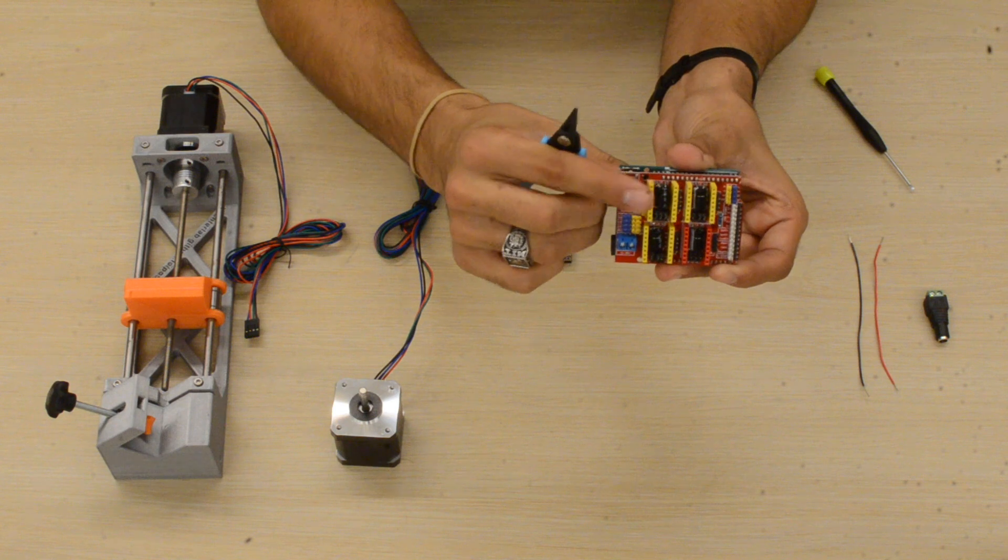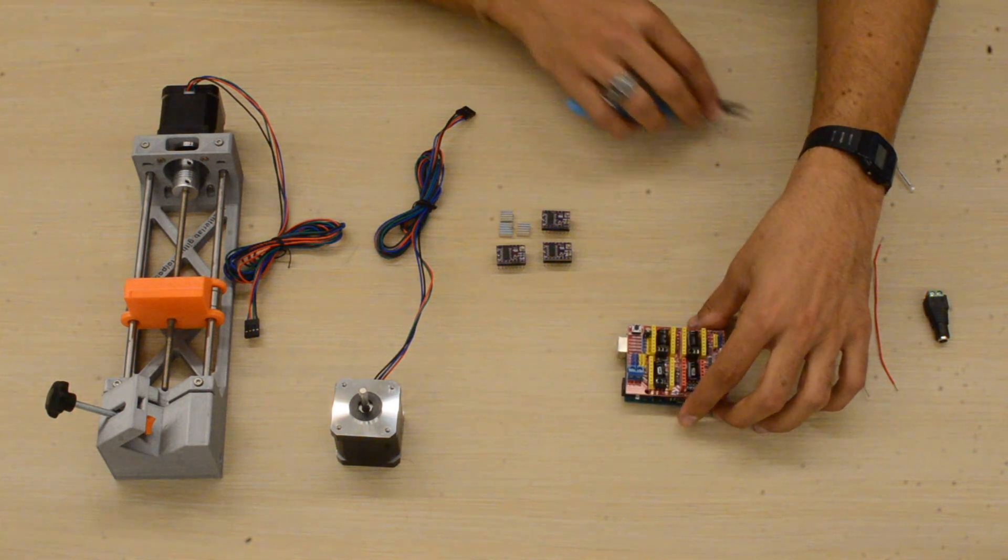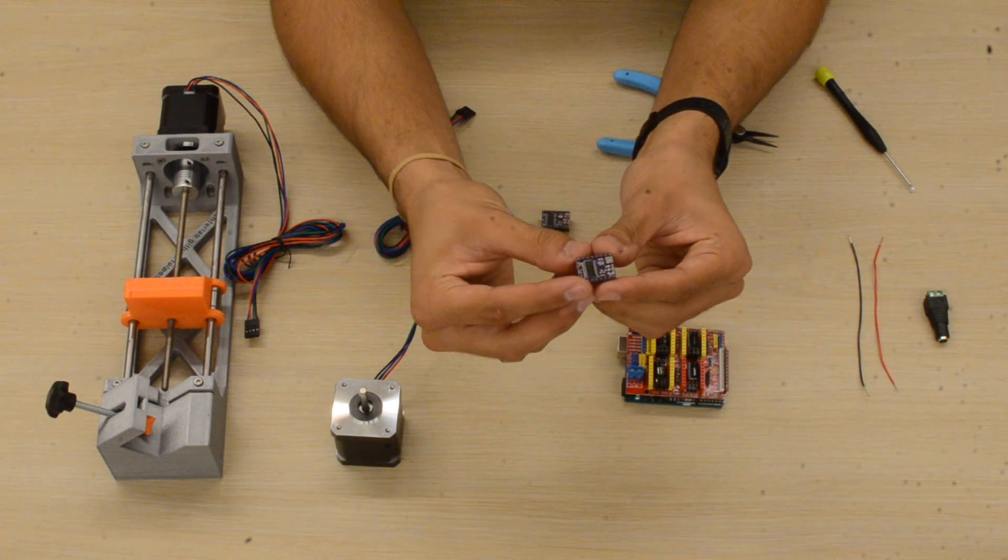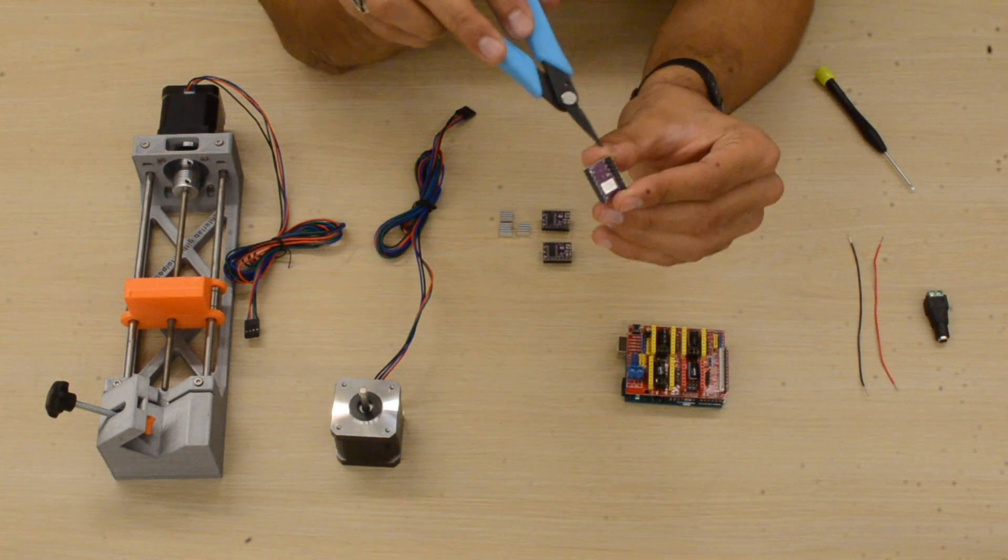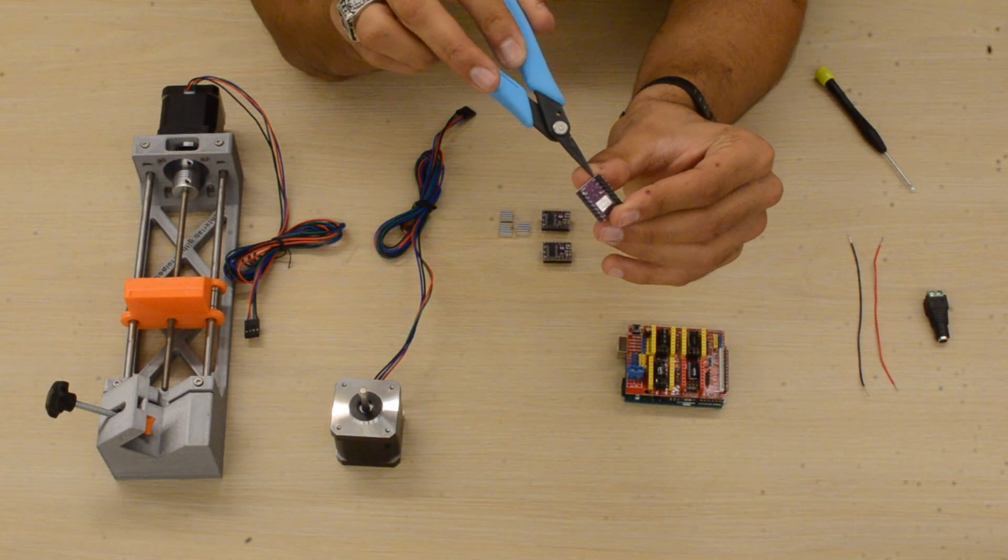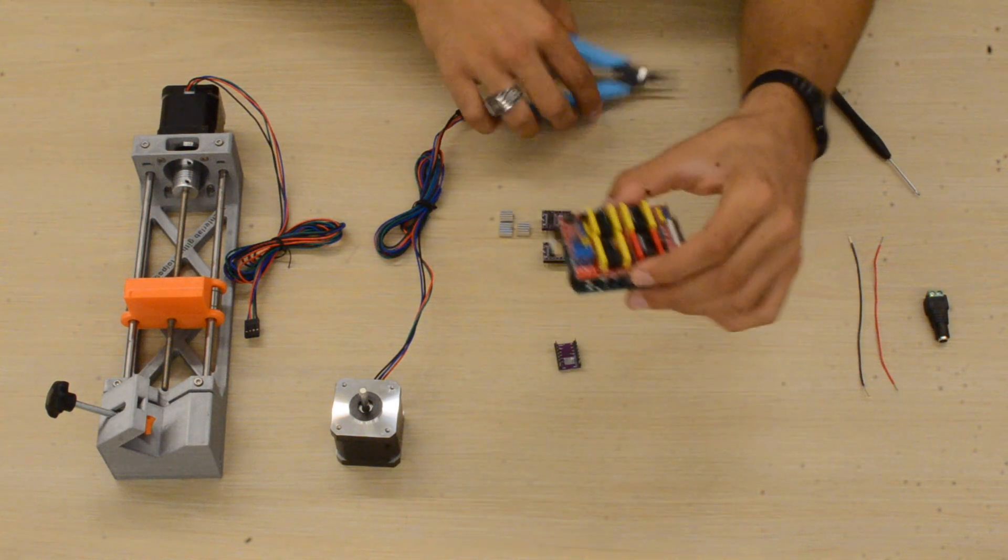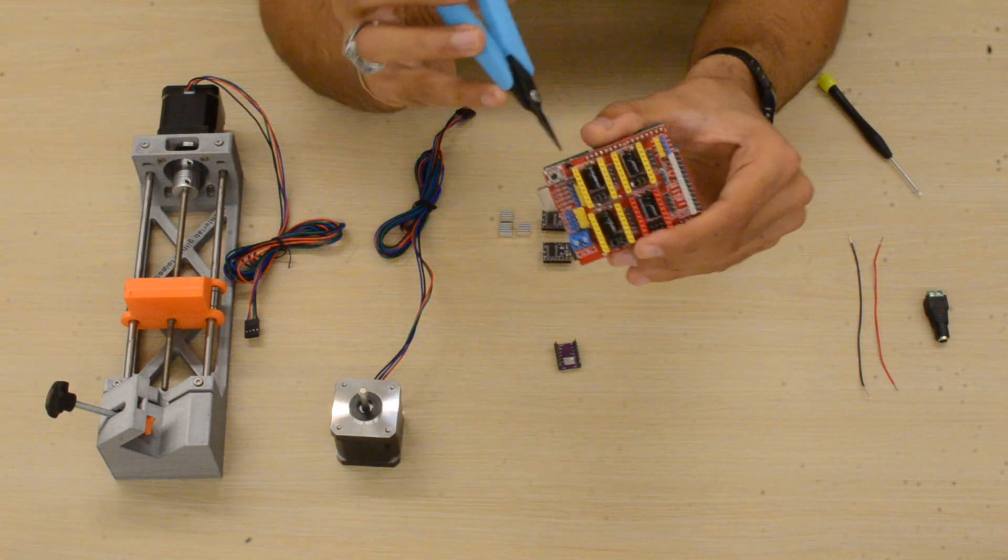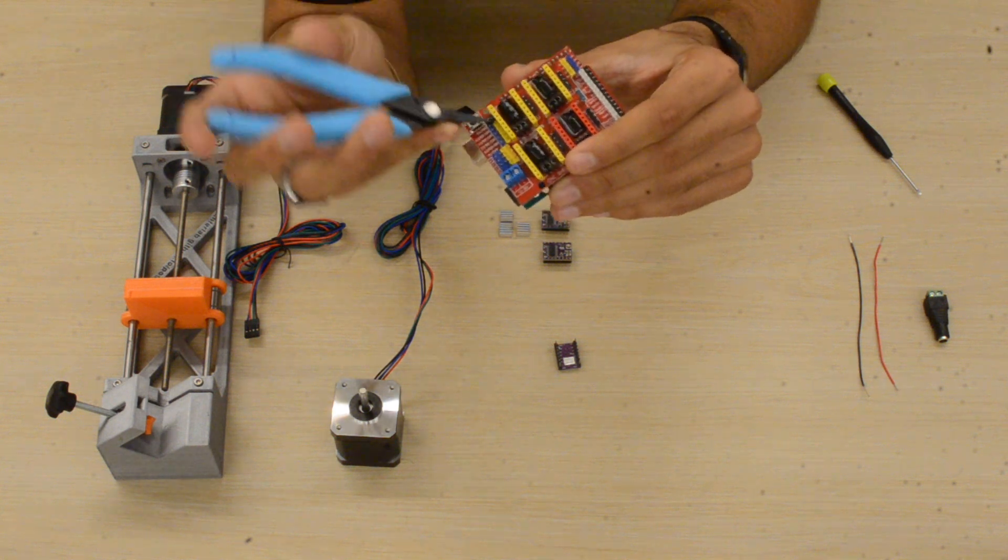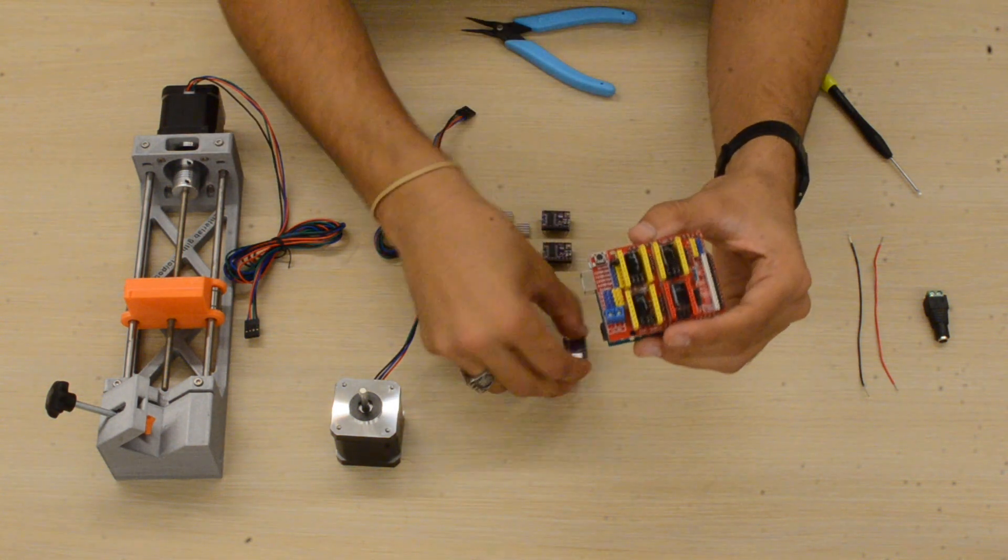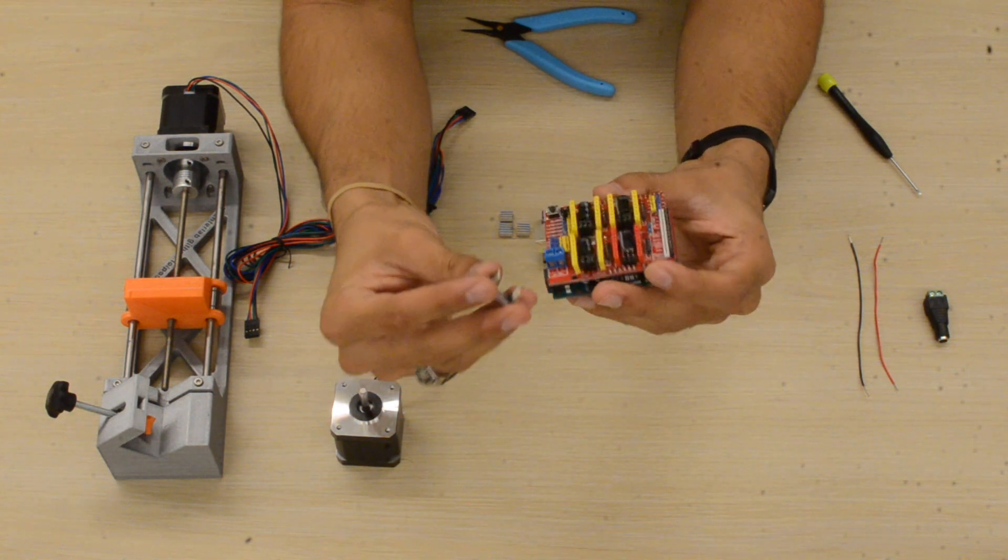Next, we'll take our Pololu stepper motor drivers and place them on the CNC motor shield. It's very important that the enable EN label aligns with the EN on the CNC motor shield—otherwise it won't be pretty; smoke will start coming out. The ENs should correspond on the board. Take a look at your driver, which is the purple bit, and your shield, and make sure that the labels align when you plug them in.